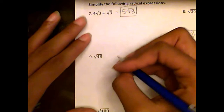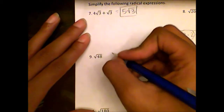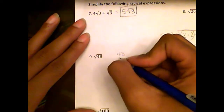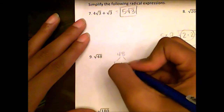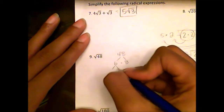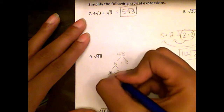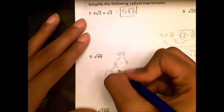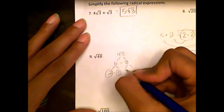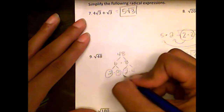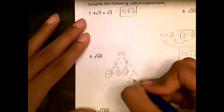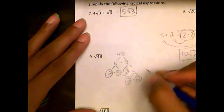Number nine: we have rad 48. Again, we're going to factor tree it out. 48 can be found by multiplying six times eight. Both of those numbers are composite, so I keep growing. Six gives two times three — both prime, so circle them. Keep growing with eight: two times four. Two is prime, circle it. Keep growing with four: two times two, both prime.